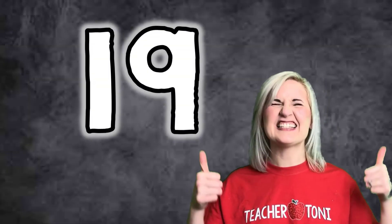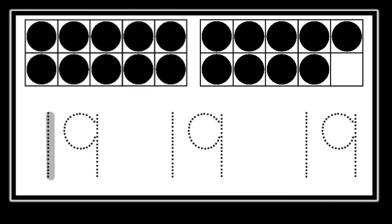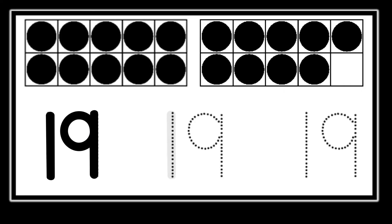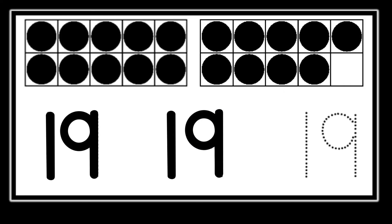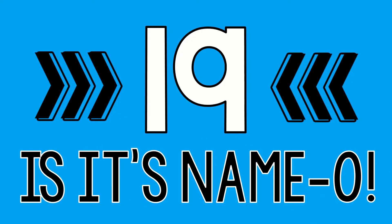Number 19. I can write a teen number. 19 is its name. Oh, 1, 9, 1, 9, 1, 9. 19 is its name.